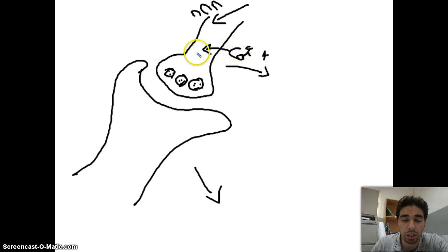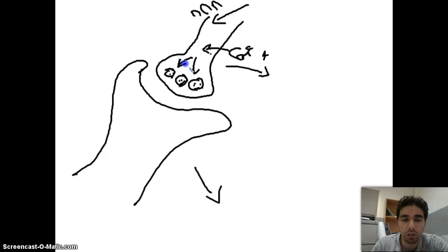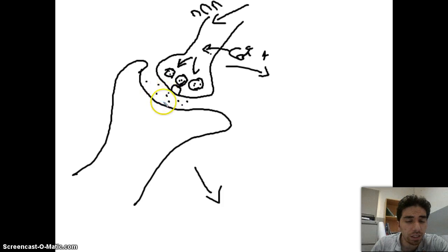When the action potential reaches the end of the axon or the synapse, we have a rush of Ca2+ ions. The channels will open due to the arrival of the action potential, and the Ca2+ will rush inside. The Ca2+ rushing inside will push the vesicles to the membrane. When the vesicles are pushed, they will fuse with the membrane, and whatever was inside will be released into the synaptic cleft — between the two neurons.